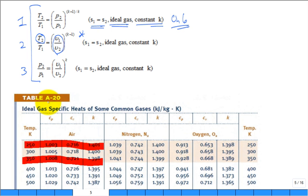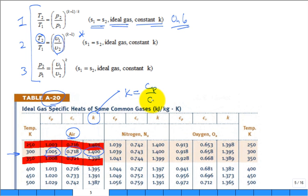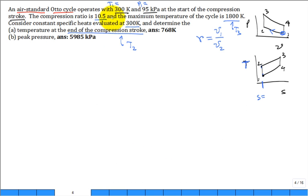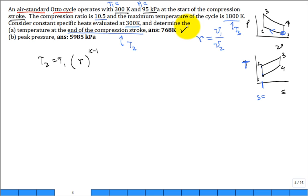The equation we'll use — since we want T2 at the end of the compression stroke and we know the compression ratio — is: T2 = T1 times the compression ratio raised to the power (k - 1). Go to Table A-20 and pick off for air: c_p, c_v, and k, where k = c_p / c_v, the ratio of specific heats. Plugging in r = 10.5, k = 1.4, and T1 = 300 K gives T2 = 768 K. Remember: use absolute temperature, not Celsius.